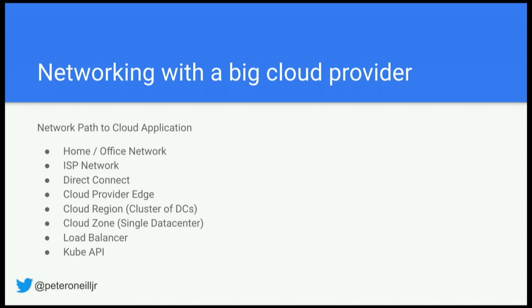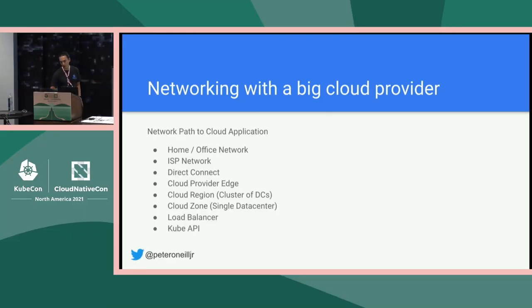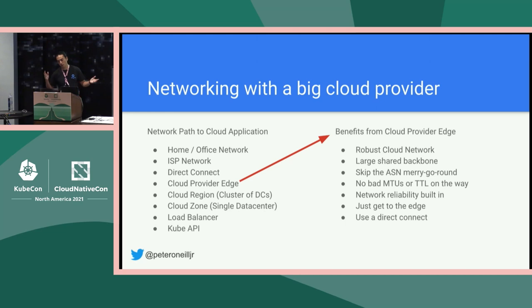Looking at the network path for the cloud native application — this is the first half of the journey. Home network, ISP. We can even simplify and say we're paying for a direct connect for our application connected to the cloud network, to our load balancers, to our Kubernetes service. Then from the edge network you're passed into a cloud region — a cluster of data centers — a single zone, which is a single data center, and then down into your Kubernetes cluster.